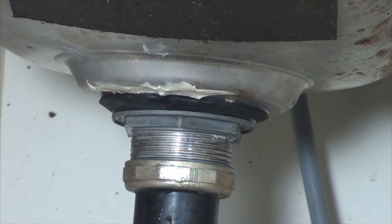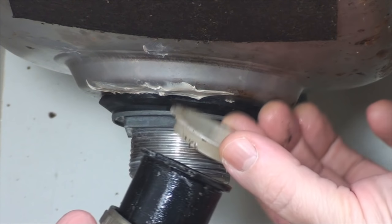First off, remove the nut that holds the flange tail piece and the top hat gasket to the base of the basket strainer.